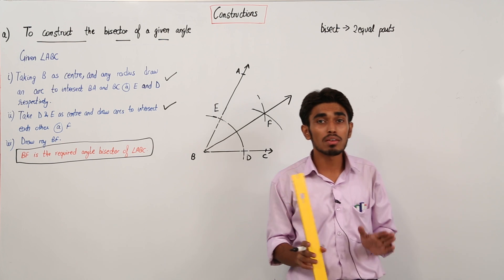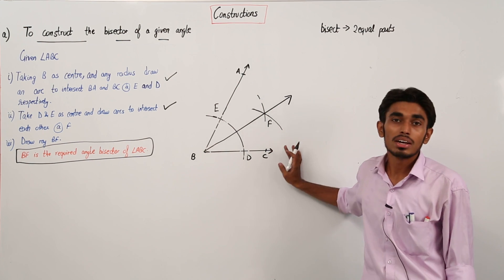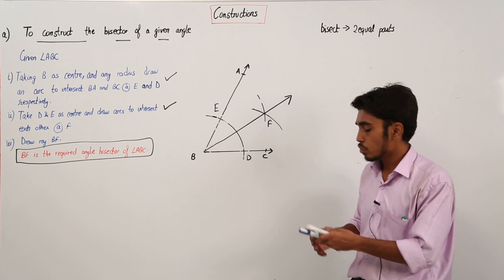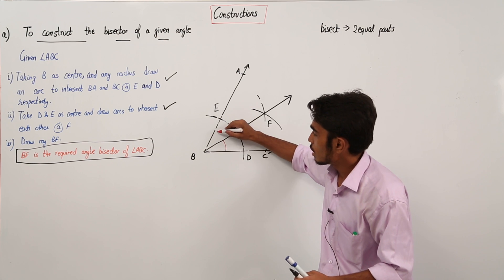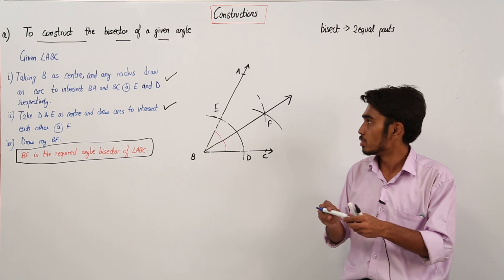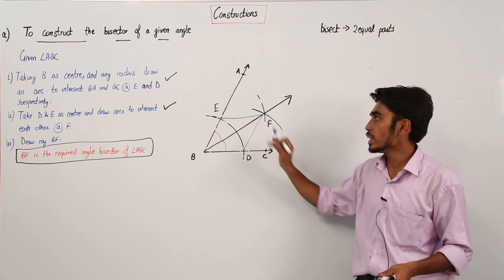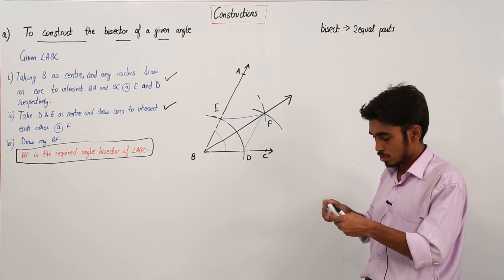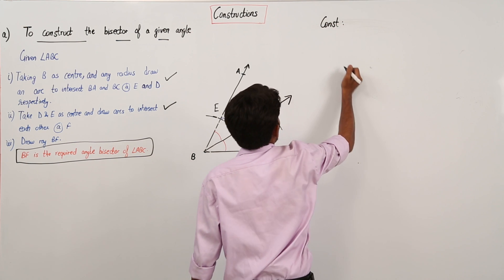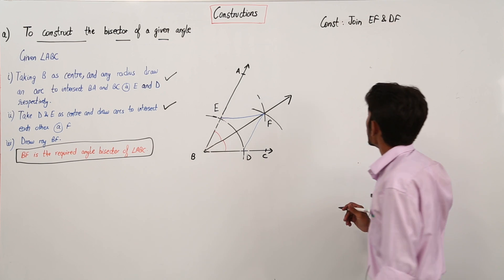Now till now, in whatever construction we have done, we just did the construction. But in this class, we will also try to prove why the construction gives us the required result. I need to prove that these two angles are equal to each other — that BF is acting as the angle bisector. So I am going to join EF and DF as my construction.